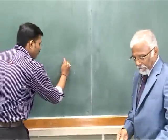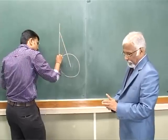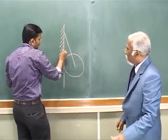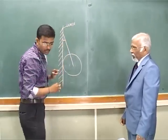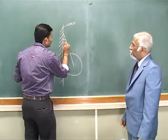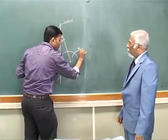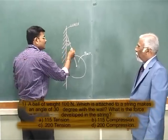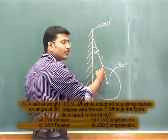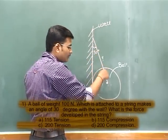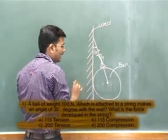The ball is attached to a string and resting on a wall. The string makes an angle of 30 degrees with the vertical wall, and the ball is attached at the center. We need to find the force developed in this string. First, we must decide whether it is tensile or compressive. Since it is a ball with its own weight, it will develop tension in the string.